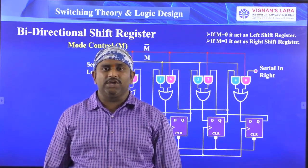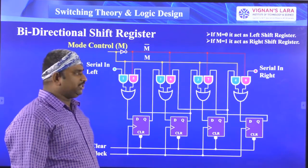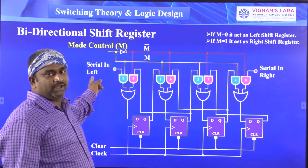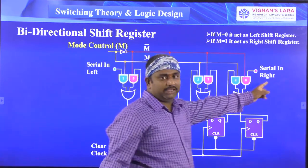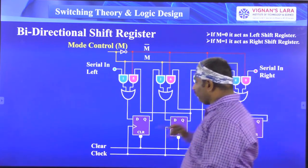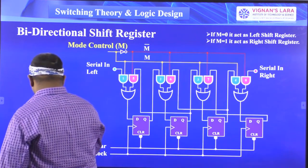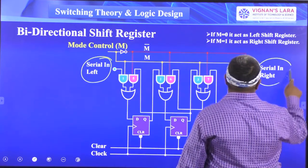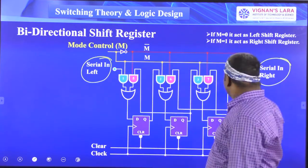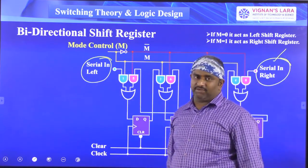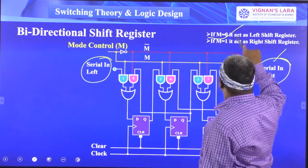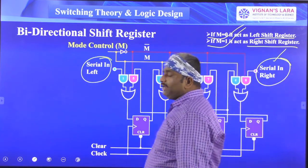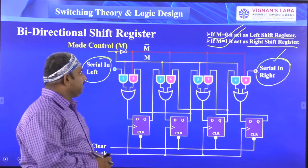Let us see the circuit diagram for the bidirectional shift register. When you give data at the left side, that is serial-in shift left. Here you are giving data serial-in and taking serial-out. From the right side you are giving the data, from the left side you are giving the data. When M is equal to 0 it acts as a left shift register; when M is equal to 1 it acts as a right shift register.